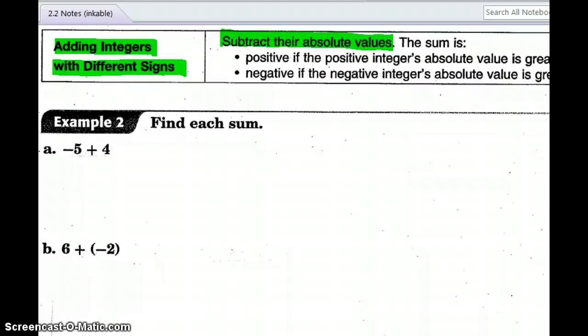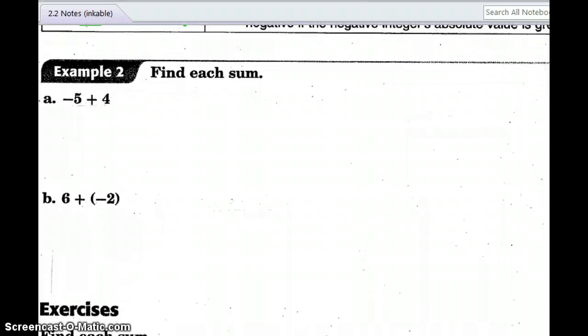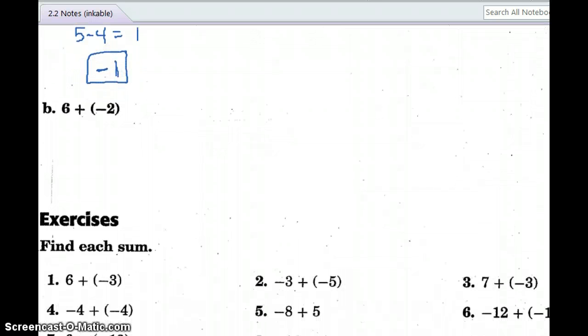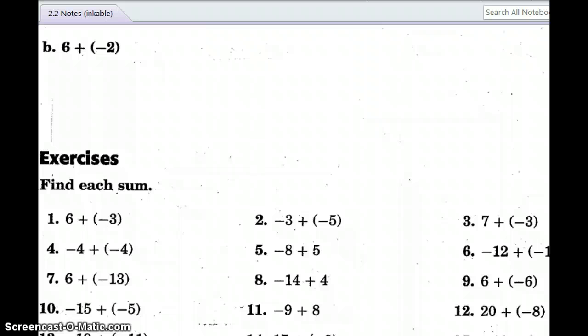You're keeping the sign of the larger absolute value. So let's look at what we're talking about. When they have different signs, here we have negative five and a positive four. You're going to always subtract them. Five minus four is one. But the final answer is one, and you keep the sign of the larger absolute value, or the number that's farthest away from zero. So our final answer is a negative one.